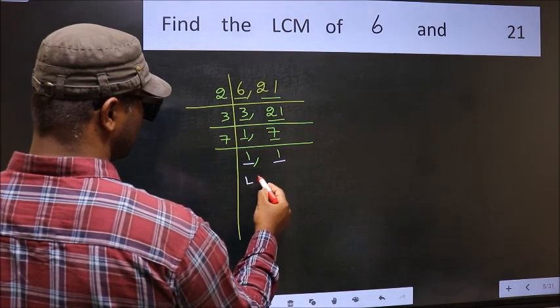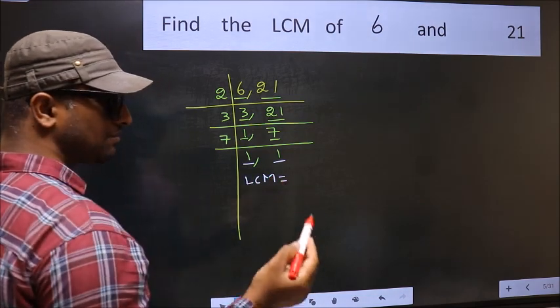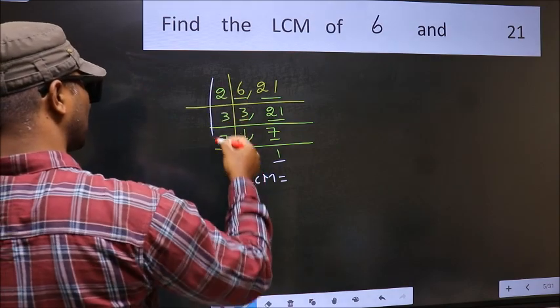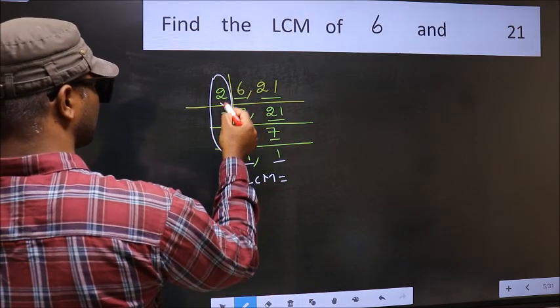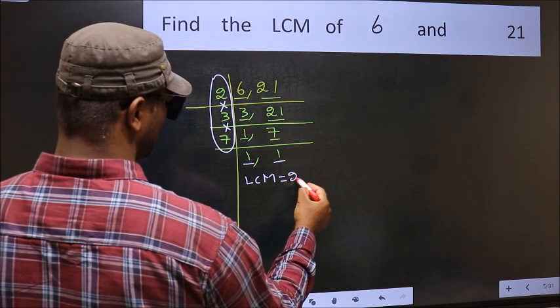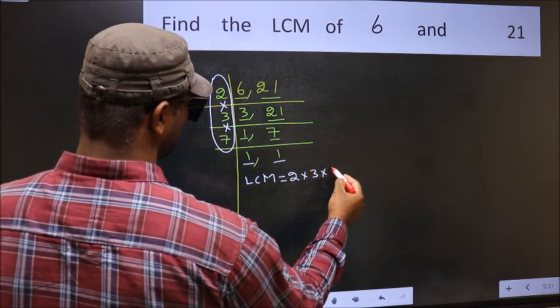So our LCM is the product of these numbers. That is 2 times 3 times 7.